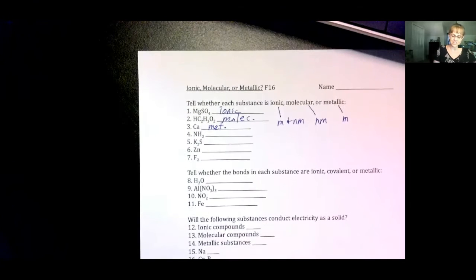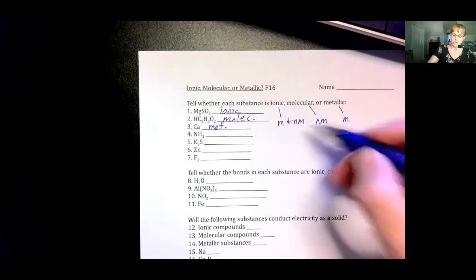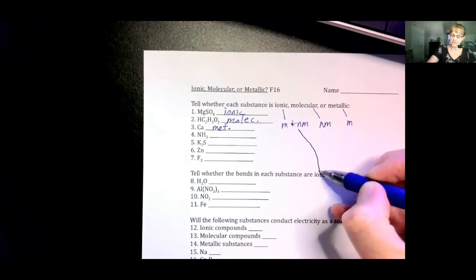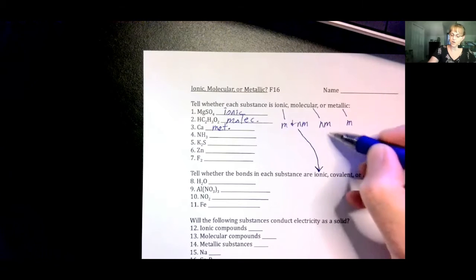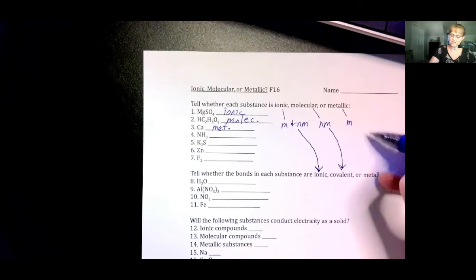Number eight, tell whether the bonds in each substance are ionic, covalent, or metallic. Well, ionic bonds are made of metals and non-metals. Covalent bonds are in molecular compounds, made of non-metals.